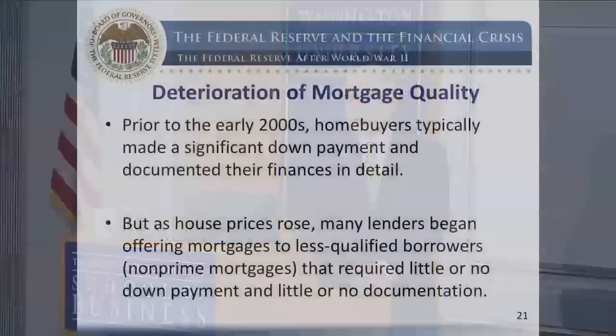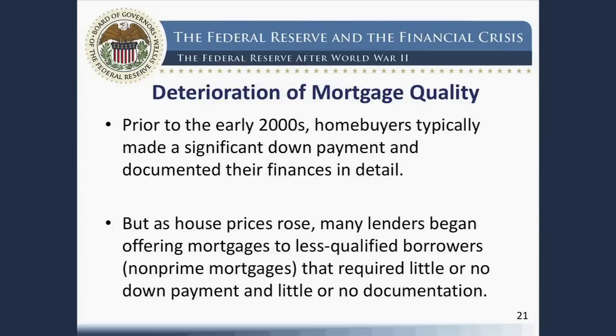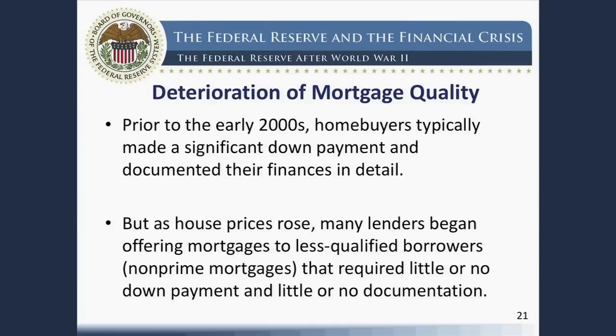Prior to the early 2000s, home buyers were typically asked to make a significant down payment — 10, 15, or maybe 20 percent of the home price — and to document their finances, income, and assets in great detail to persuade the bank to make them a loan that might be four or five times their annual salary. Unfortunately, as house prices rose, many lenders began to offer mortgages to less qualified borrowers — so-called non-prime mortgages — which often required little or no down payment and little or no documentation. Subprime mortgages were the lowest quality in terms of borrower credit, but there were also alt-A and other types of mortgages below traditional prime standards.